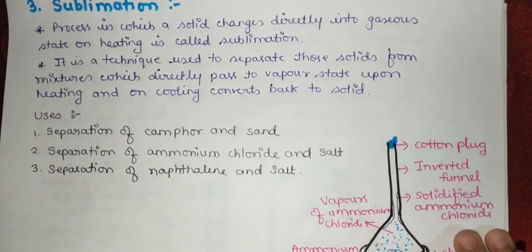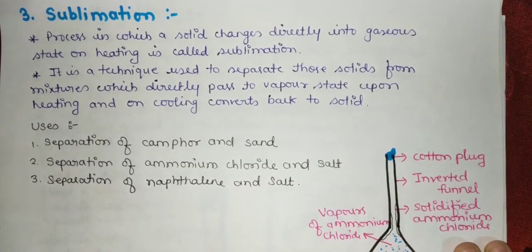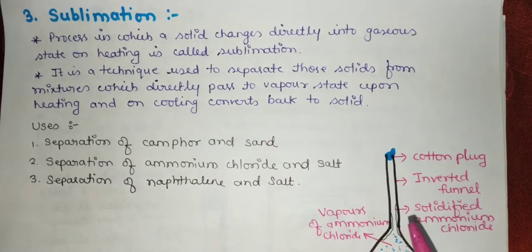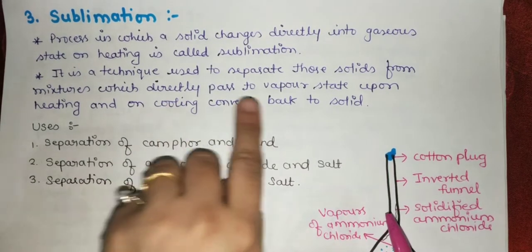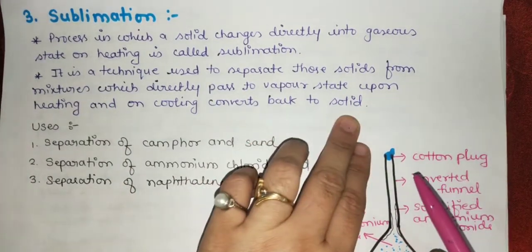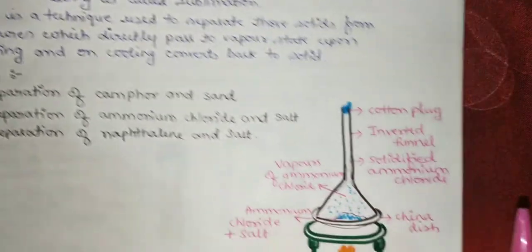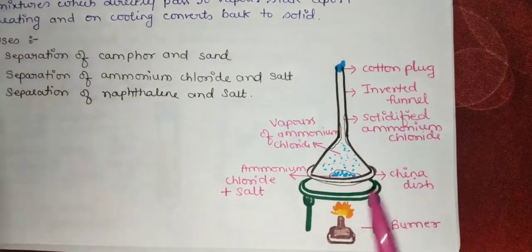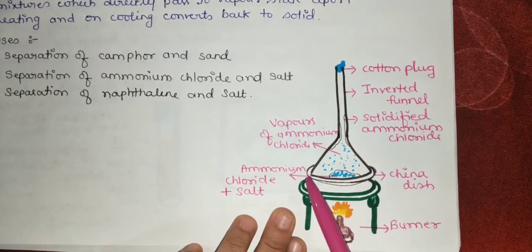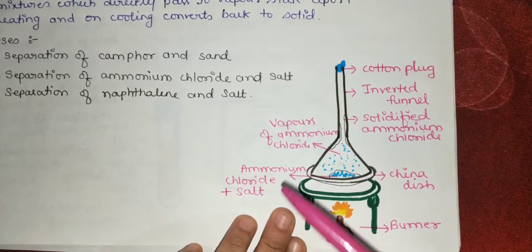Next is the sublimation method. Sublimation is a process in which a solid changes directly into a gaseous state on heating. It is a technique used to separate solids from mixtures that directly pass to vapor state upon heating, and on cooling convert back to solid.